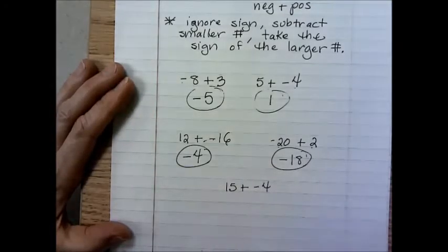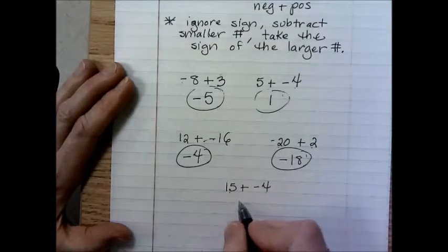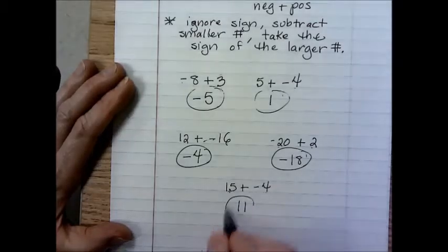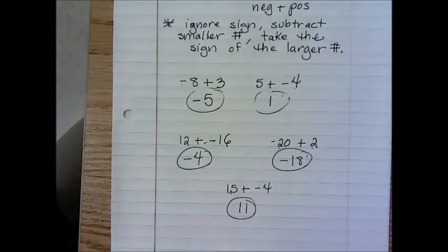For 12 plus negative 16: ignore the signs, 16 minus 12 is 4. Sixteen is larger and it's negative, so the answer is negative 4. For negative 20 plus 2: 20 minus 2 is 18, and 20 is larger and negative, so the answer is negative 18. Finally, 15 plus negative 4: 15 minus 4 is 11, and 15 is positive, so the answer is positive 11. Thanks for checking in, I hope this helped!